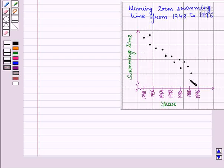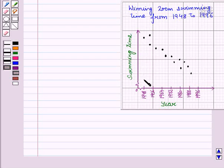Now let us see the second graph. In the second graph we have swimming time of winning the 200 meter swimming championship on the vertical axis and years on the horizontal axis.